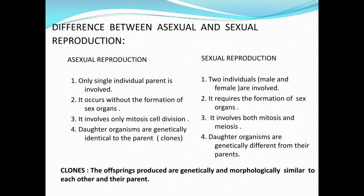Two columns are shown here — one side asexual reproduction, the other side sexual reproduction. Number one difference: in asexual reproduction, only a single individual parent is involved — only one parent is enough for the process — whereas in sexual reproduction, two individuals, mainly male and female, are involved. Number two: asexual reproduction occurs without the formation of sex organs, whereas sexual reproduction requires the formation of sex organs.